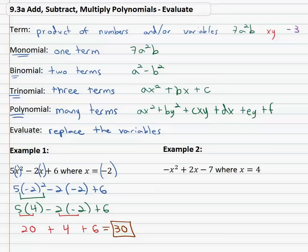Let's try another example. Here we have negative x² plus 2x minus 7 where x is equal to 4, simply going to replace each of the x's with 4 in parenthesis.